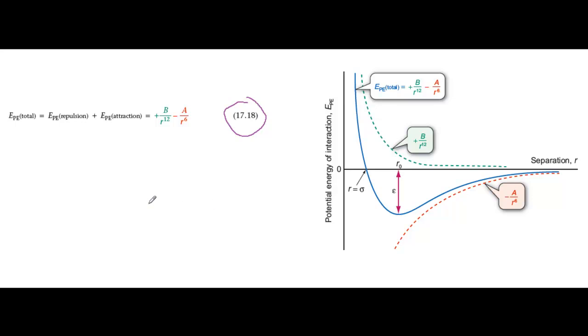This total potential energy is called the Lennard-Jones potential. A and B are constants for a particular type of molecule.